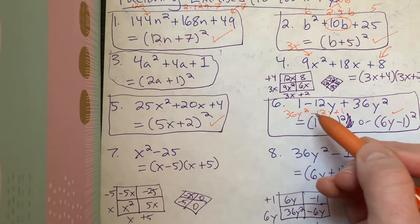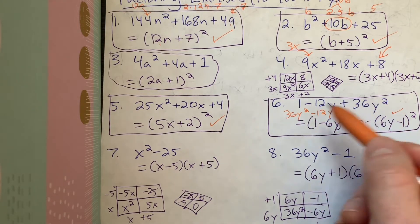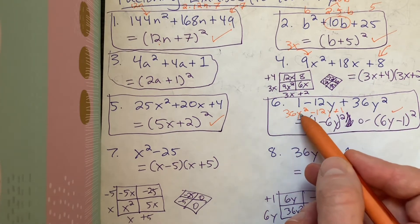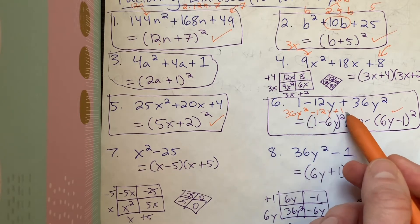So y is being squared here. So this here, the top one, the way it was written earlier, was not written in standard form. In standard form for a quadratic, it needs to be written in the order of highest exponent to lowest exponent.